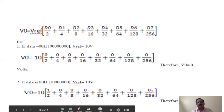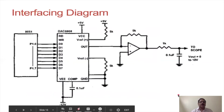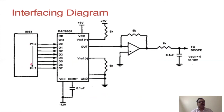So you will get 5V as the output voltage. That is how, for a corresponding digital input using the D-to-A converter, we get the equivalent output voltages. Here you can see the interfacing diagram of the D-to-A converter with the microcontroller. Port 1 is again used — P1.0 to P1.7 — as an output port, with digital input applied to the DAC.